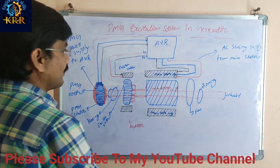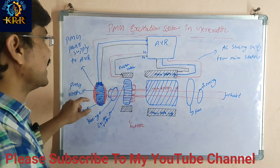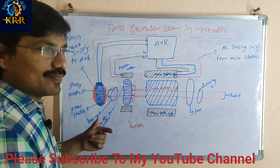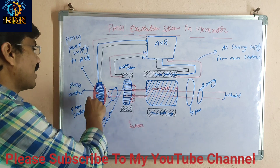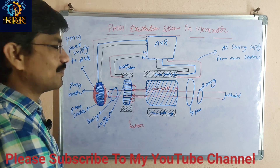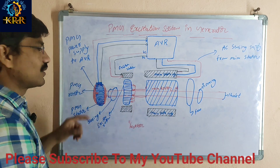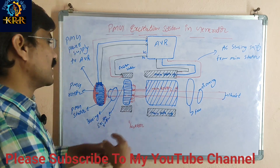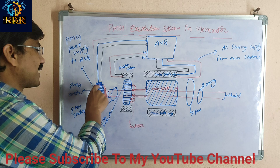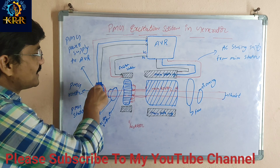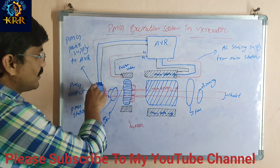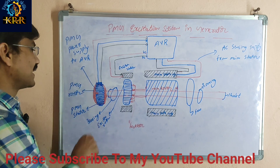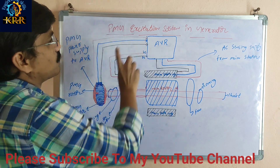As the shaft is rotating, in the PMG the stator winding and rotor permanent magnet are present. The shaft is connected to the rotor — when the rotor rotates, the permanent magnet rotates. The flux is rotating and cuts through the stator winding, so power is generated in this stator.